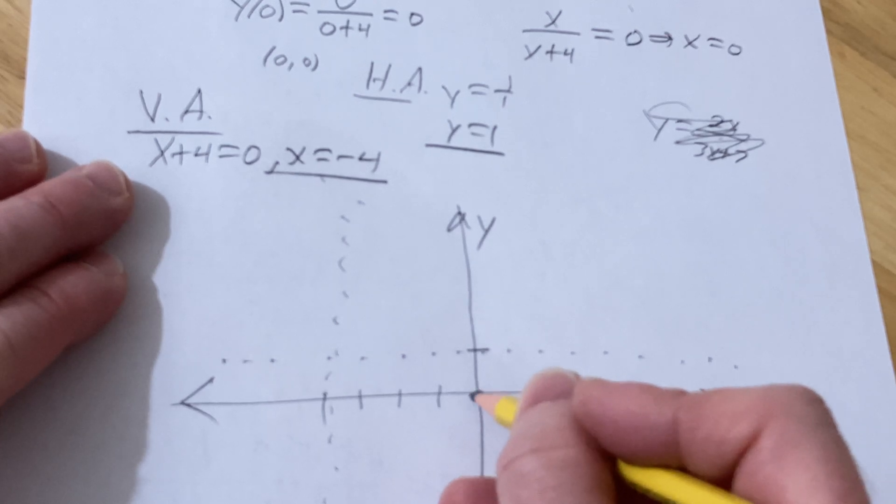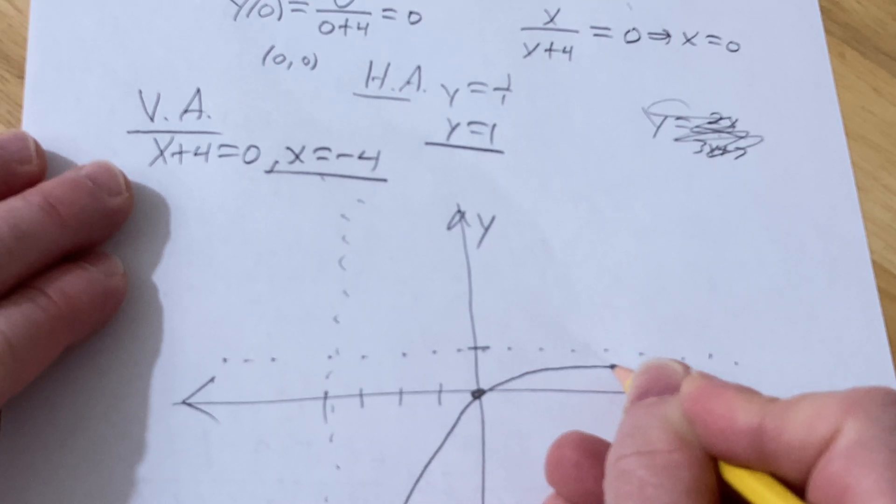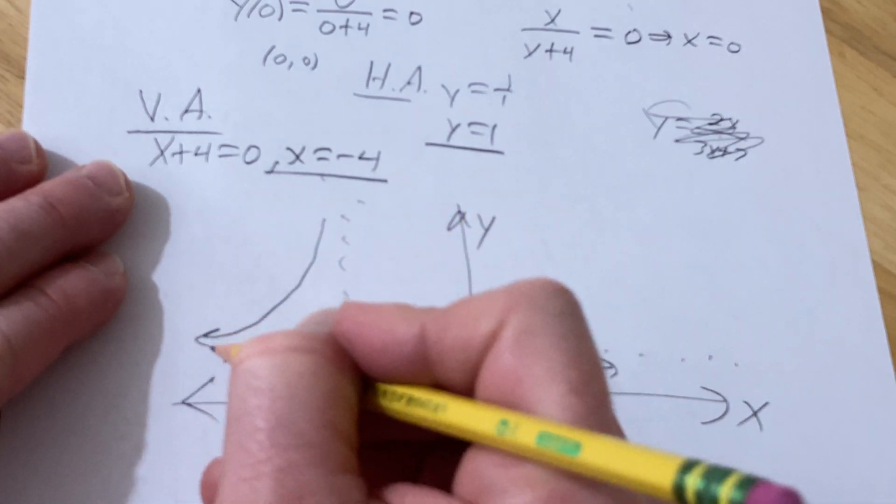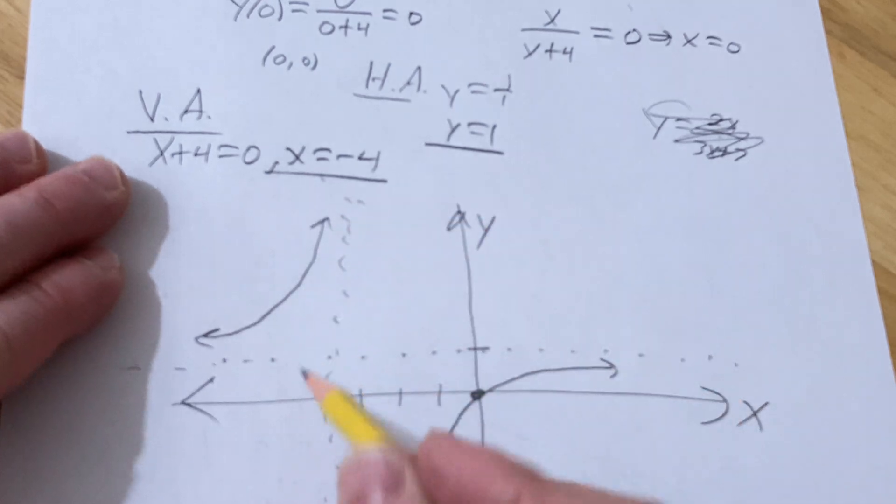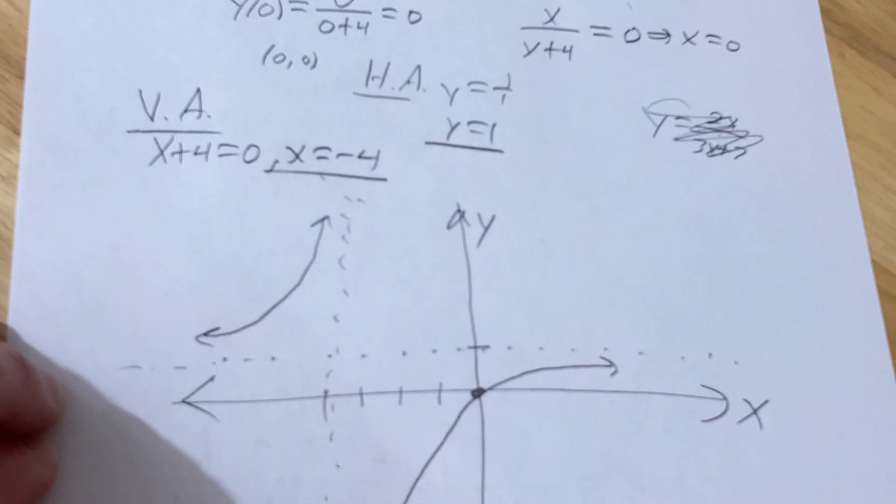We know it crosses through 0, 0. So it must look like this, because it must approach the asymptotes. And the rest of the graph must be over here. You might say, why must it be over here? Why is it not over here? If it was over here, it would fail the vertical line test and it wouldn't be a function. So that's the graph.